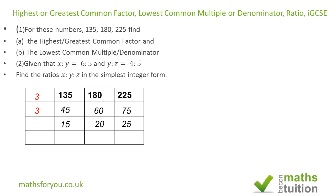Now 15, 20, and 25 are not multiples of 3, so we try 5, which is the next prime number. Since the numbers end in 5 or 0, each of these is a multiple of 5. Dividing by 5: 15÷5=3, 20÷5=4, and 25÷5=5.